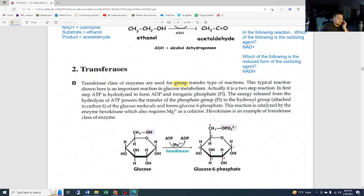The energy released from the hydrolysis of ATP powers the transfer of the phosphate group to the hydroxyl group. So we have ATP broken down to ADP with magnesium right here acting as a—remember, magnesium is a metal. Take a minute: is it a cofactor or is it a coenzyme? It's a cofactor because to be on Fear Factor you have to be a little metal. The energy powers the transfer of the phosphate group to the hydroxyl group attached to carbon 6 of the glucose molecule and forms glucose-6-phosphate. This reaction is catalyzed by the enzyme hexokinase, which also requires magnesium as a cofactor.